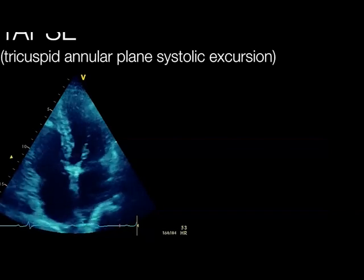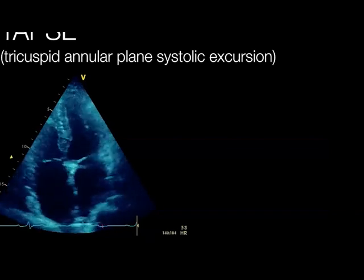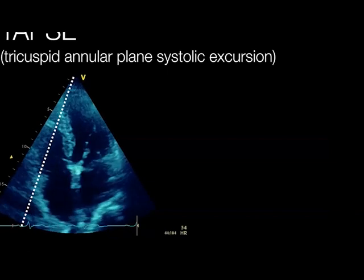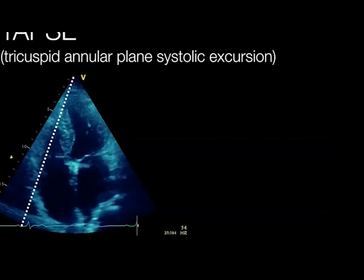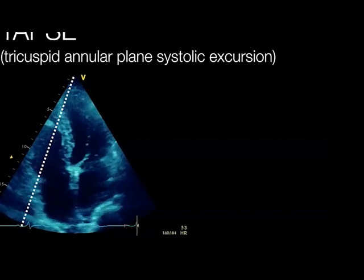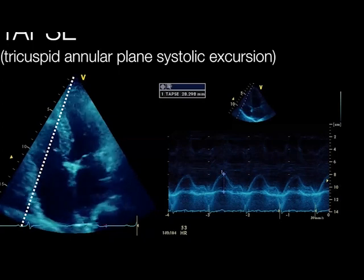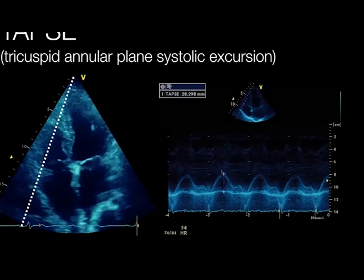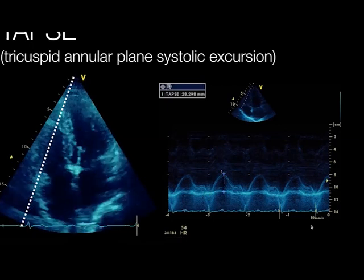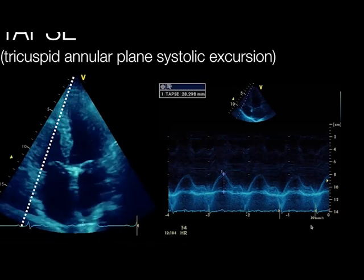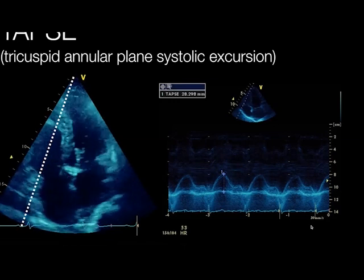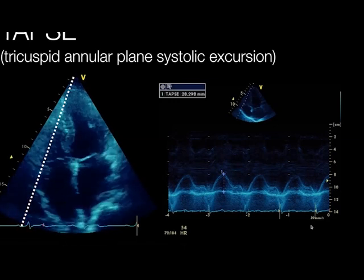TAPSE — tricuspid annular plane systolic excursion — is the old favourite. Place the M-mode through the lateral annulus in the apical four-chamber view and measure how far that annulus moves towards the apex. We measure from the bottom to the top of the humps: greater than 16 mm is normal, less than 16 mm is abnormal. In studies comparing to MRI as the reference standard, it's not too bad.